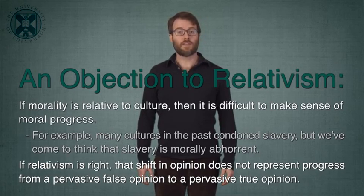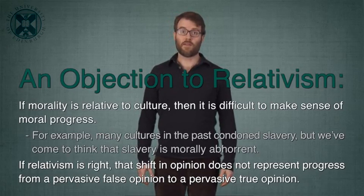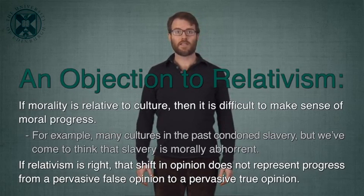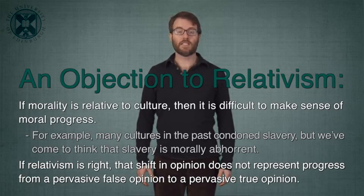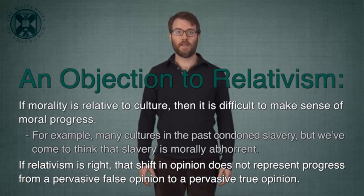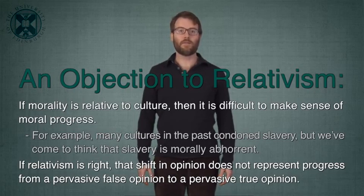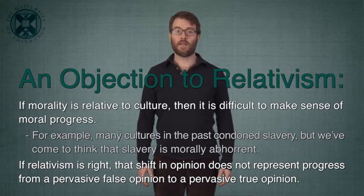For example, many cultures in the past condoned slavery, but we've come to think that slavery is morally abhorrent. If relativism is right, that shift in opinion does not represent progress from a pervasive false opinion to a pervasive true opinion, for the relativist thinks that each moral opinion is made true or false relative to the culture in which it's made. The idea of intellectual progress seems like an important commonality between morality and science, which relativism has a hard time explaining.